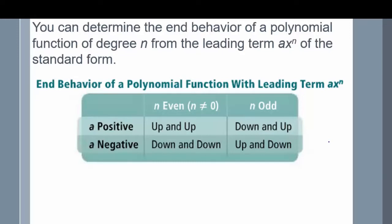Here's the chart for end behavior. You can determine the end behavior of a polynomial function of degree n from the leading term, where a is your coefficient and n is your exponent. Make sure your function is written in standard form. If my coefficient is positive and my exponent is even, then my graph starts up and ends up. An example would be f of x equals x squared — the exponent is even and the a value of 1 is positive, so the graph starts up and ends up.